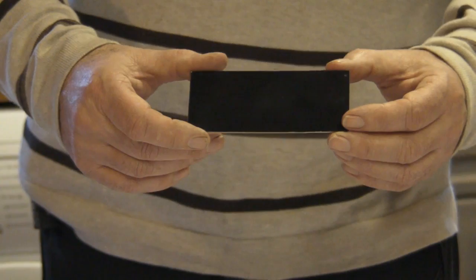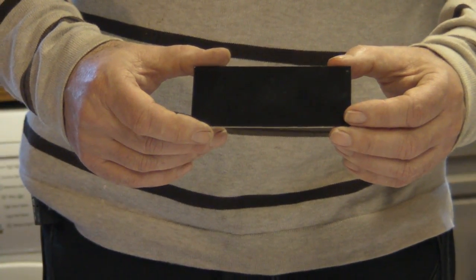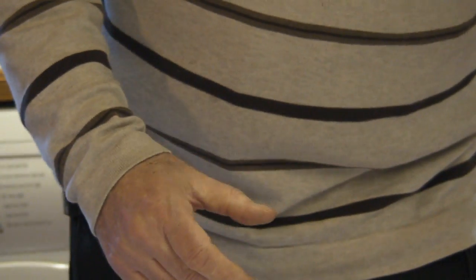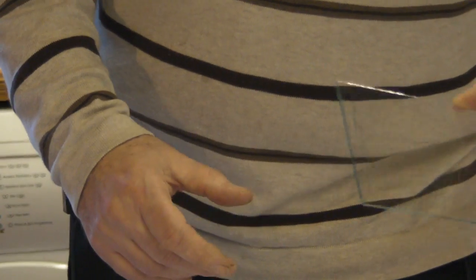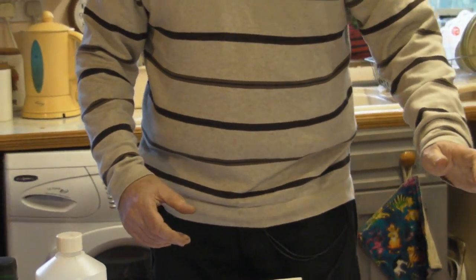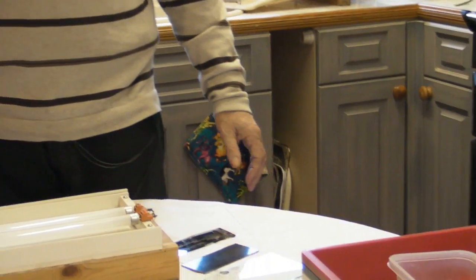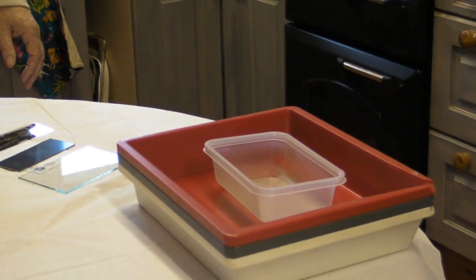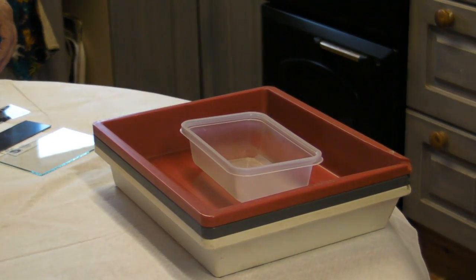We've got the photosensitive printed circuit board ready to be etched and developed, and a piece of glass just to keep it all flat. I'll show you that in a minute. And a couple of trays to develop and wash the printed circuit board.